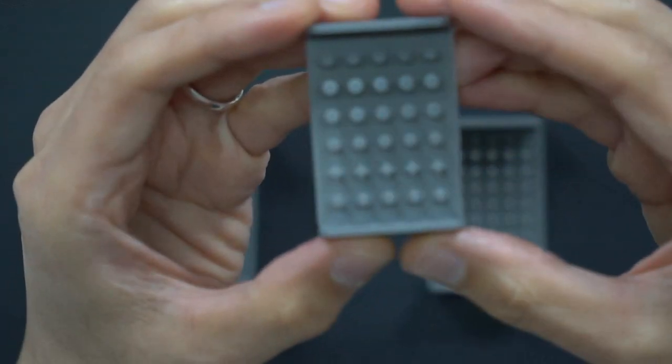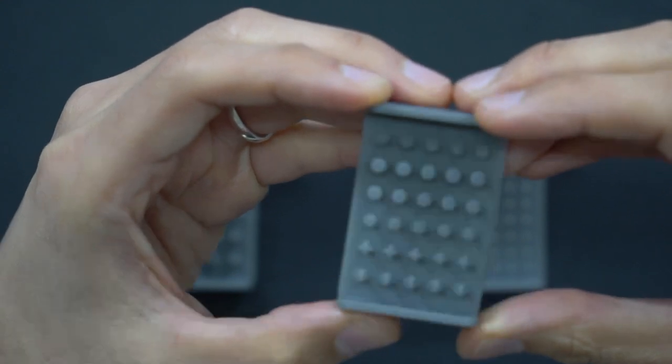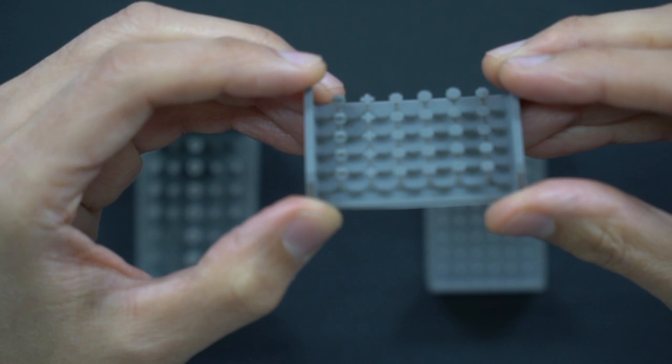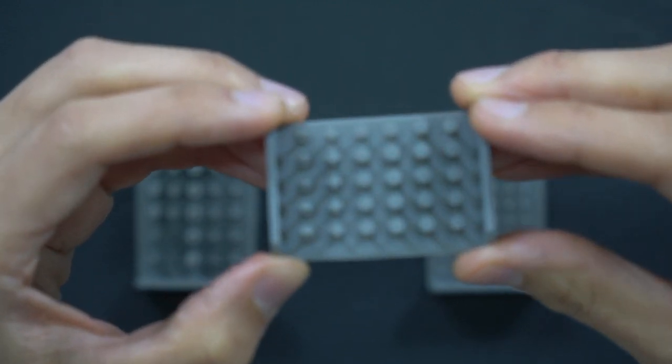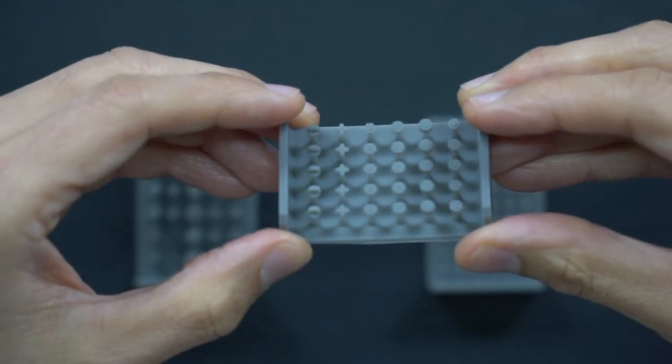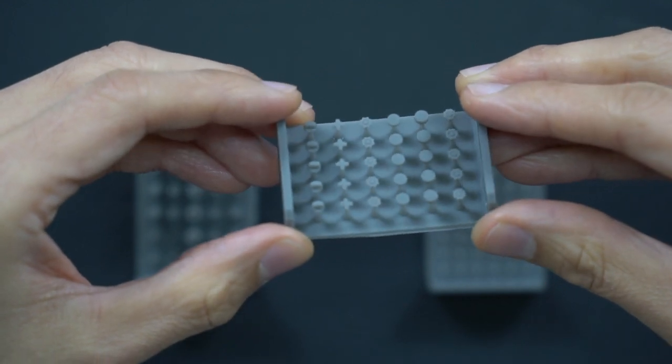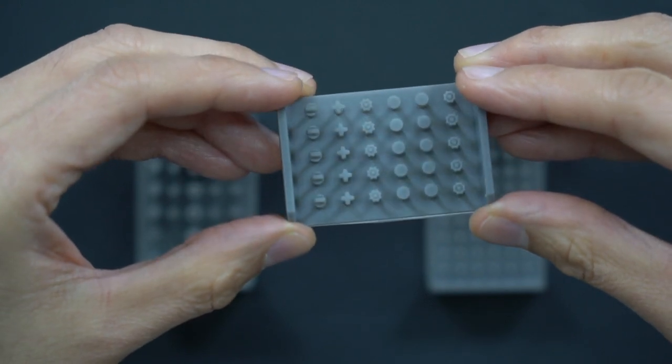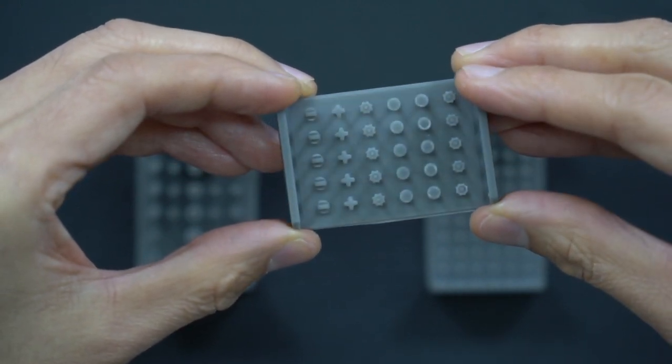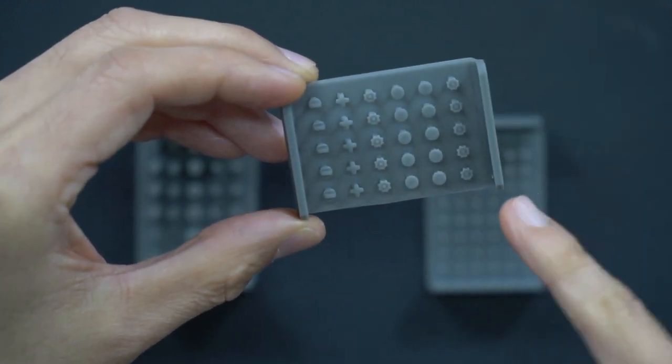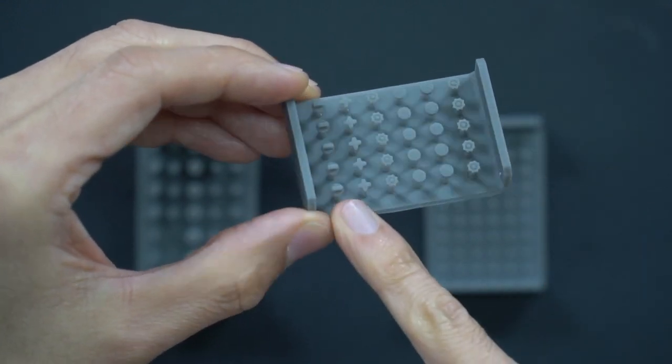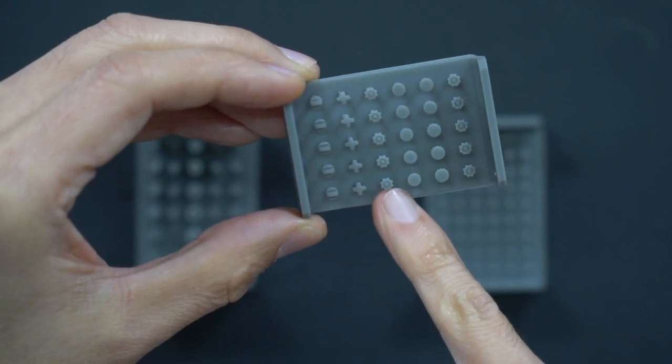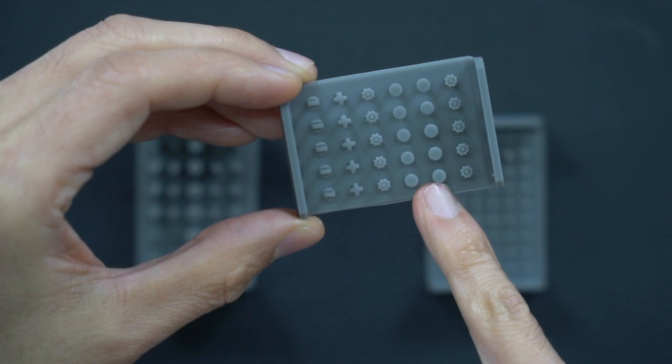Over here we have the knobs in, I think, one thirty-second scale. You can see these are knobs that could easily be used on an aircraft cockpit. You've got knobs here with extensions on them, cross-shaped ones, multi-angled, and round with knurls.